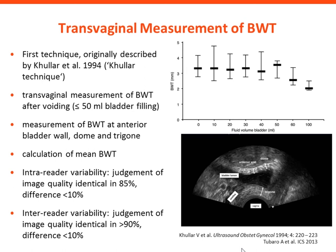This is the first technique, described already in 1994 by Vic Coulard — our chairman here today — so I would like to name this the Coulard technique. It's almost 20 years old. It's about transvaginal measurement of bladder wall thickness after voiding, and you should have a bladder filling volume of 50 ml or less. The rationale you can see here: bladder wall thickness shows no significant differences in the first 50 ml, but when you fill the bladder more than 50 ml, bladder wall thickness decreases. So you are in the same state of bladder filling when the bladder contains less than 50 ml.